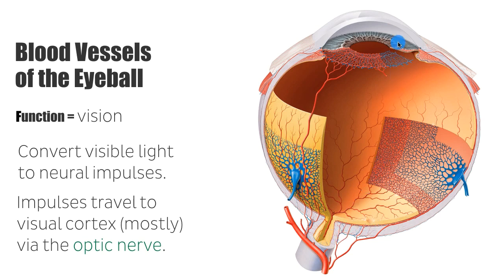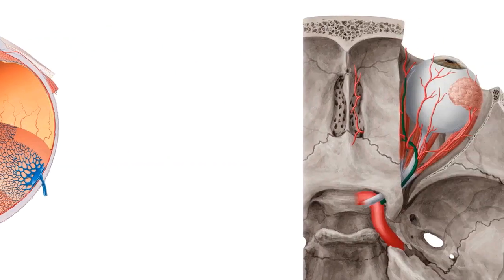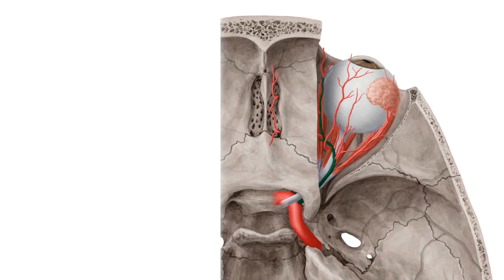We can also see the iris here. For more detail on these structures and their function, have a look at our tutorial on the eyeball, which is on our website. So now that I've given a brief introduction on the structure and function of the eye, we can now move on to looking at the blood vessels.